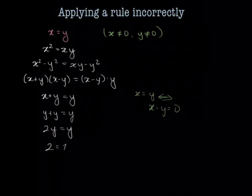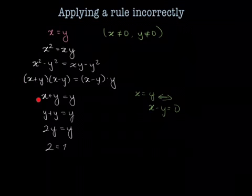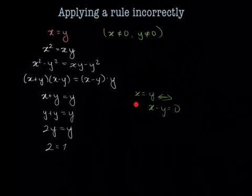So what, where else did we find that? We found that right here. Well, from this step to this step, I canceled the x minus y term, but from over here, implicitly by declaring x minus y to be 0 in the beginning, I've divided by 0.